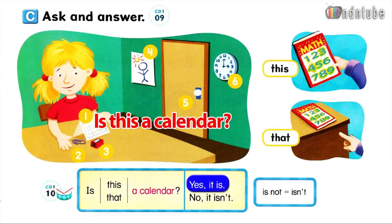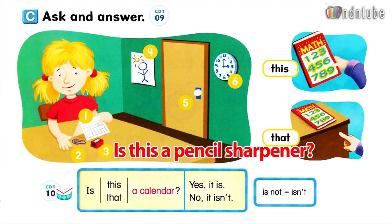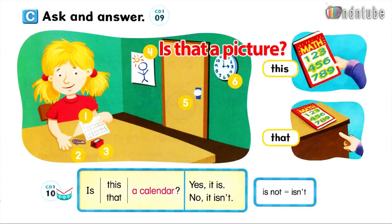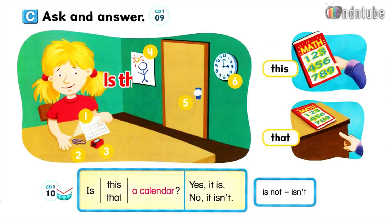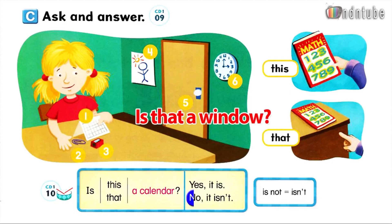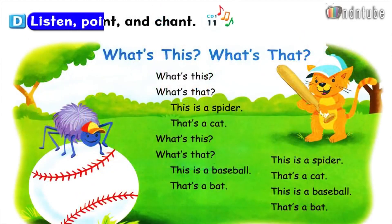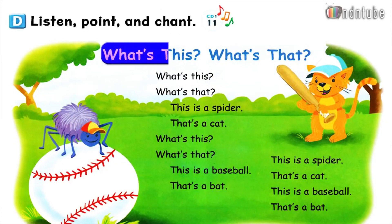Is this a calendar? Yes, it is. Is this a paperclip? Yes, it is. Is this a pencil sharpener? Yes, it is. Is that a picture? Yes, it is. Is that a clock? No, it isn't. Page 7. D. Listen, point and chant. What's this? What's that?